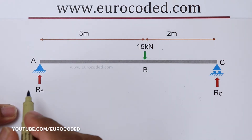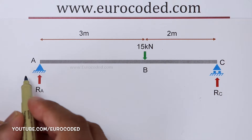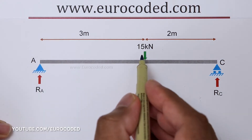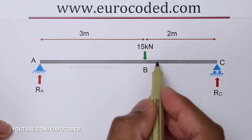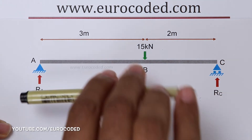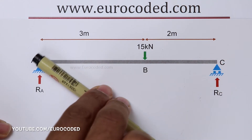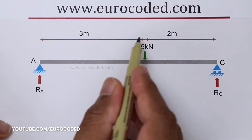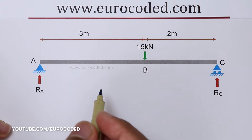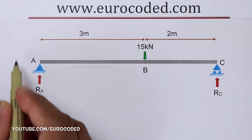I am going to explain what that means with this example. If we take moments about point A, then this externally applied force of 15 kN would try to rotate this beam in a clockwise direction about point A. Therefore, this externally applied force results in a clockwise moment when we take moments about point A.